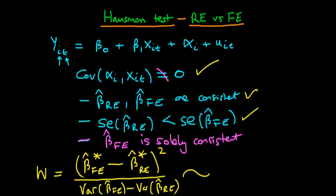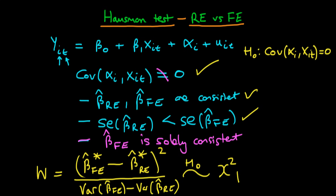Under the null hypothesis, this statistic is chi-squared with one degree of freedom. The null hypothesis being tested is that the covariance of alpha_i with x_it is equal to zero — in other words, that we should be able to use random effects. The alternative is simply that the null hypothesis is not true.